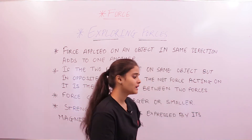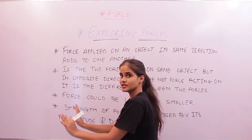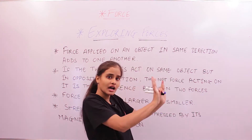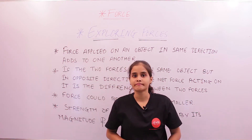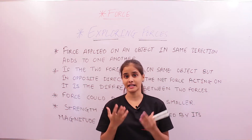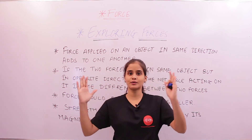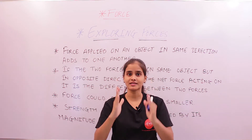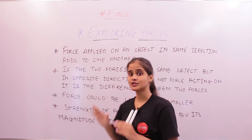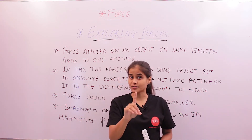Now, what if somebody is trying to prank you? If you are applying a force in one direction and that person is applying a force in the opposite direction — you're pushing this way and they're pushing the other way — what would happen? If you both have the same body weight, the bench might just not move at all, because the forces are acting in two different directions.